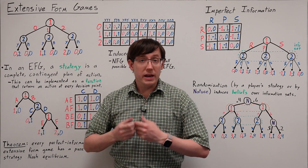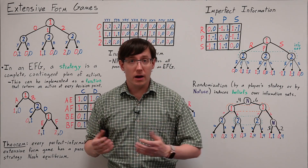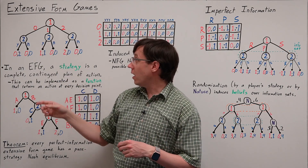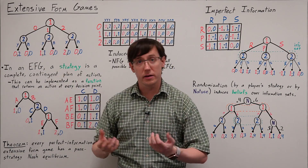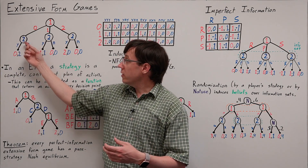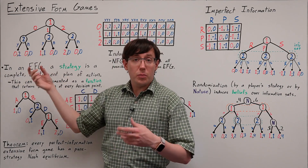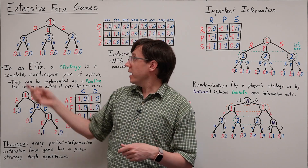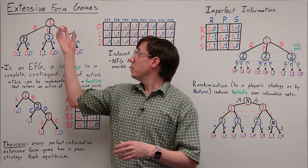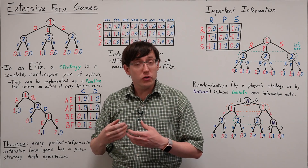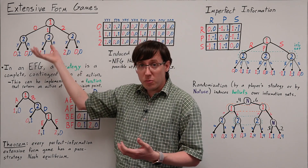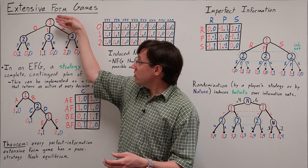This game tree models an interaction where two players are trying to agree on how to divide up two items. First, player 1 proposes a split, offering either 0, 1, or 2 of the items to player 2. And for each offer that might be made, player 2 can say yes or no. If player 2 accepts the offer, each player's payoff is how many items they got. And if player 2 rejects the offer, neither player gets anything. Because this interaction involves player 1 making a decision first and then player 2 responding, it makes sense to represent it with a game tree.